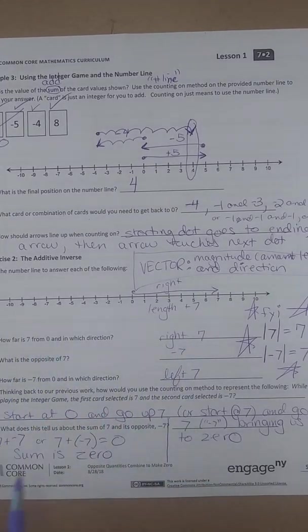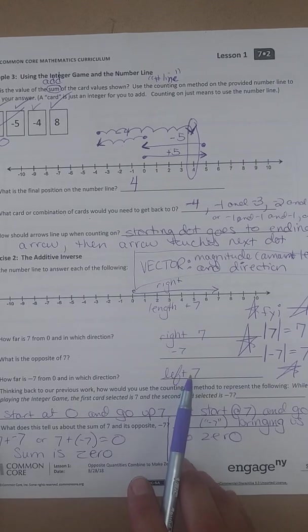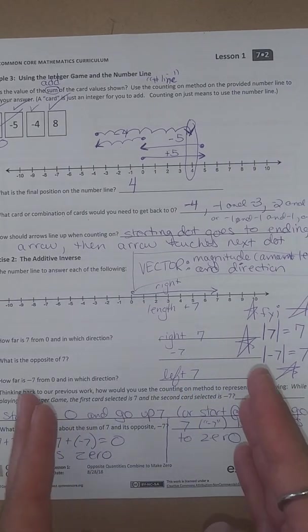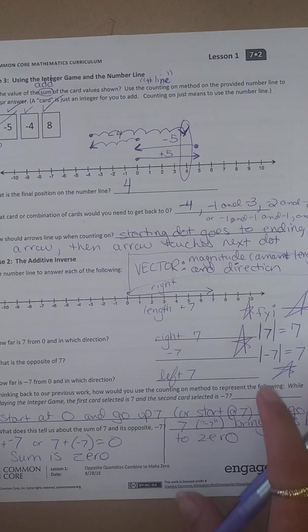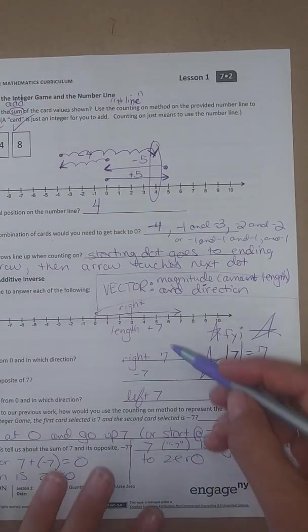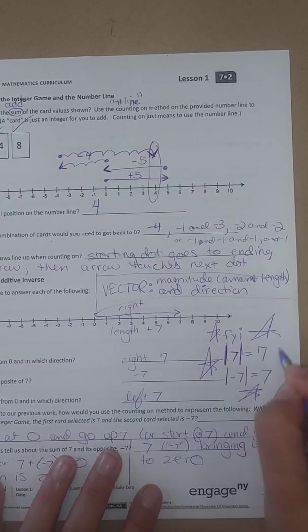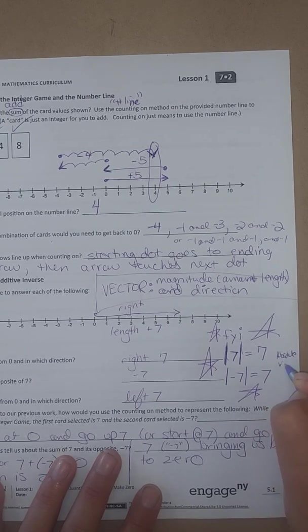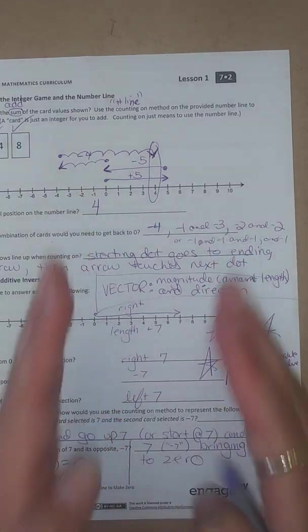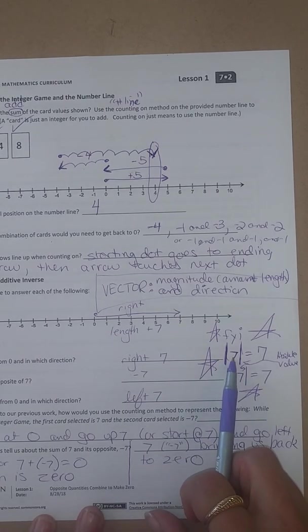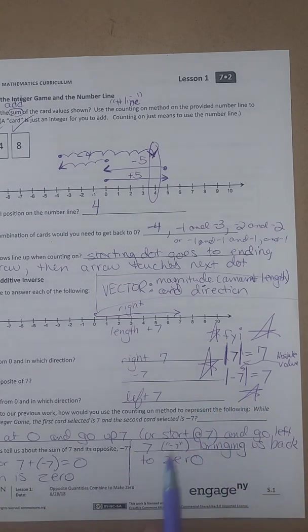7 is 7 units from 0. The opposite of 7 is negative 7. How far is negative 7 from 0? It's also 7 units, which is interesting. The positive 7 is 7 length. The negative 7 has a length of 7. The length or distance something is from 0 is called its absolute value. This is absolute value symbol. This is absolute value symbol. Okay? Those bars are absolute value. This means the distance 7 is from 0 is 7. The distance negative 7 is from 0 is 7. They have the same length. Okay?